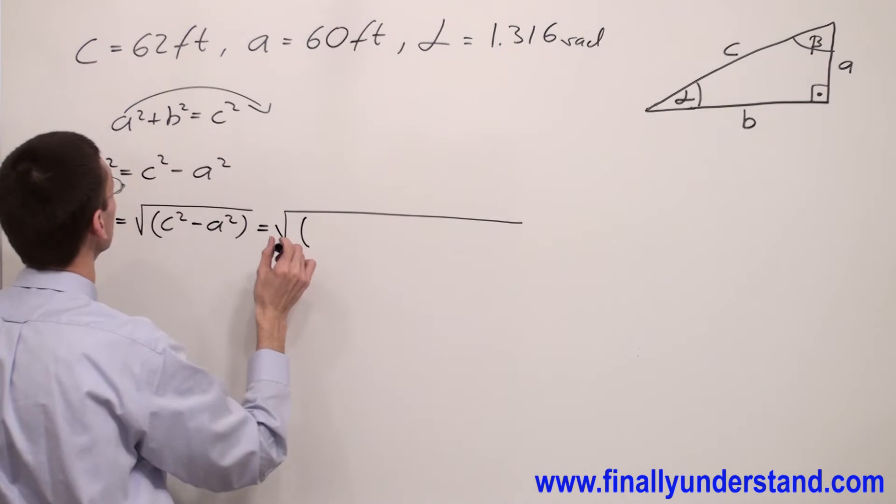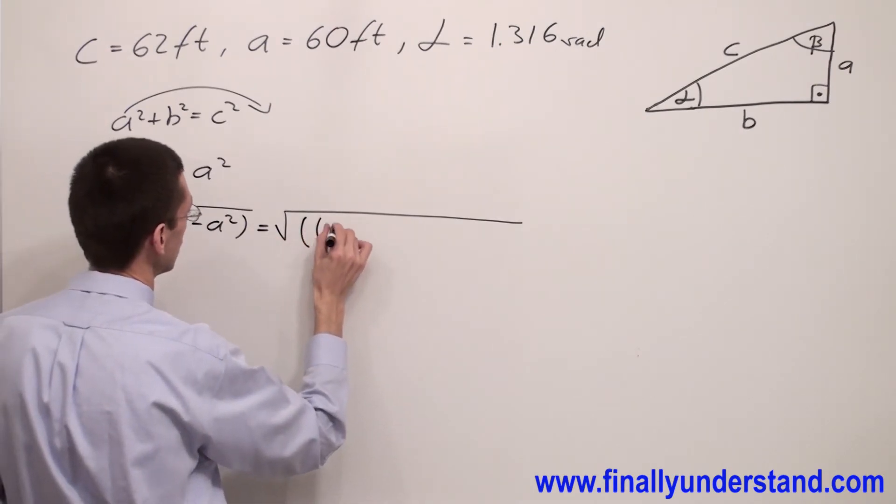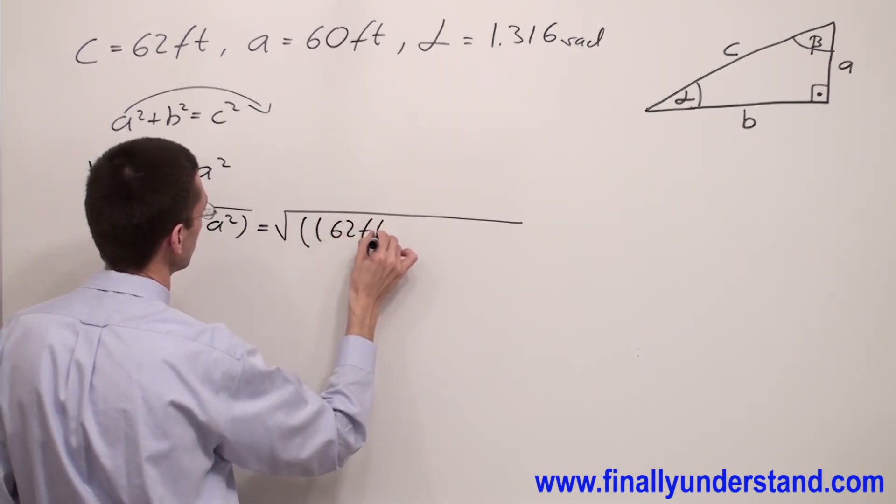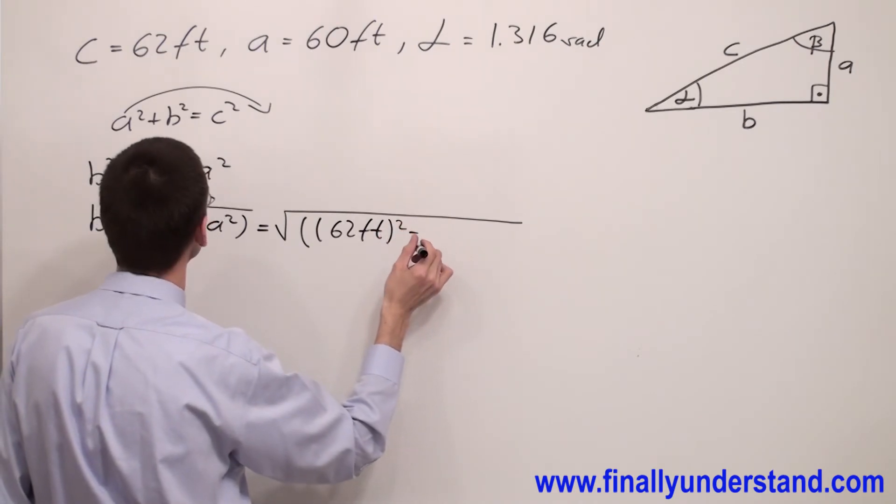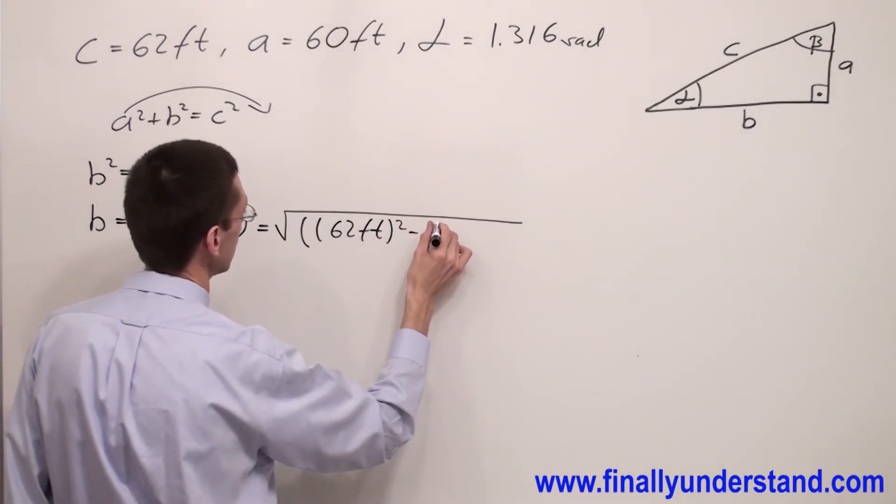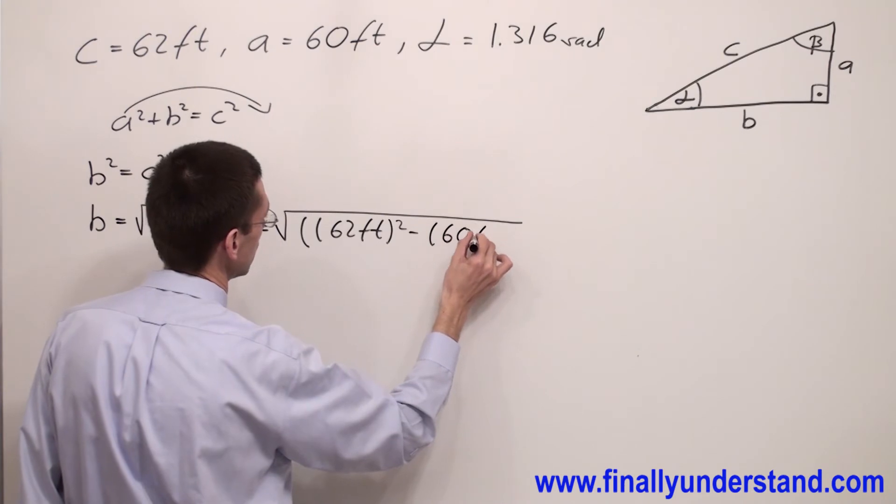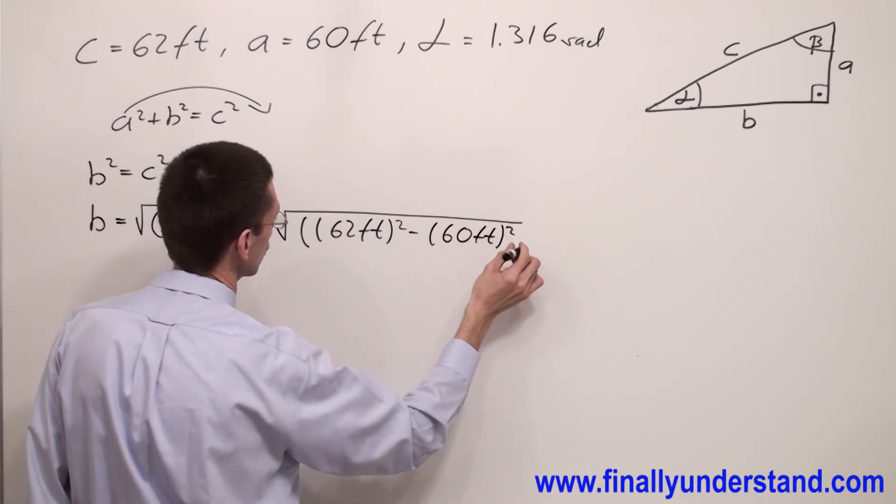Which equals the square root, open parenthesis, and I have 62 feet squared minus A, which equals 60 feet squared.